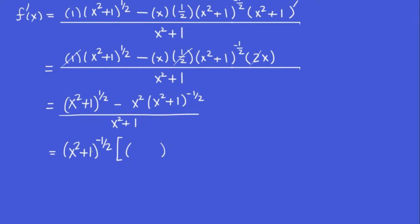What do you multiply x squared plus one by to get x squared... Sorry, what do we... If you have x squared plus one to the negative one half, what do you multiply that by to get x squared plus one to the positive half?